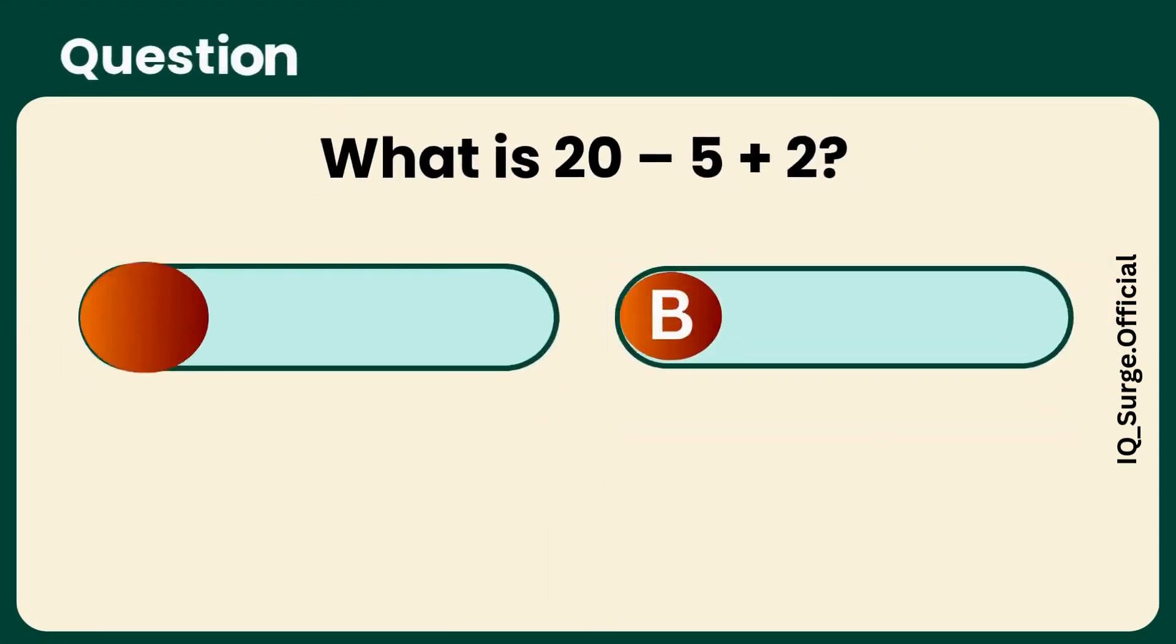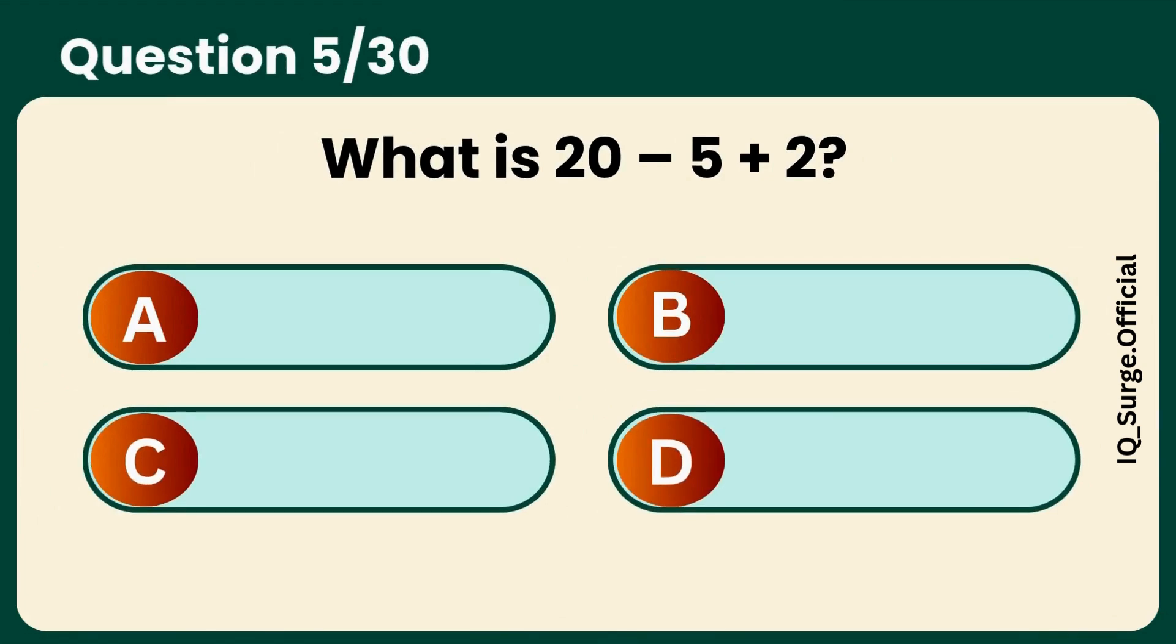What is 20 minus 5 plus 2? Answer B, 17.